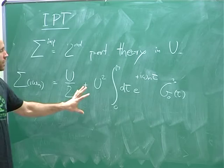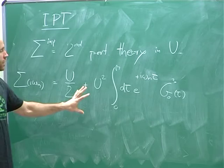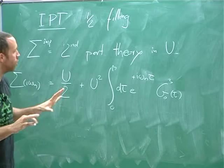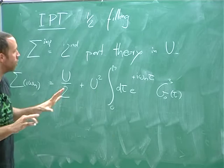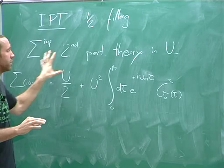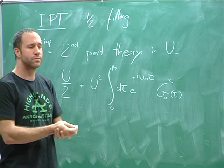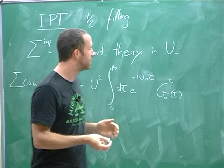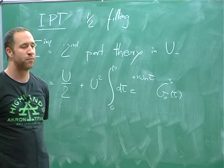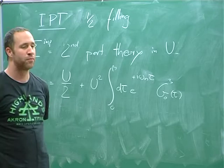One thing to add: this IPT approximation, at least as presented here, is focused at half-filling. When you go away from half-filling there are different ways you might want to write IPT, so it's not completely well-defined away from half-filling. The IPT solver is so simple to write that you just write it directly — we don't have the generalized version in the code.